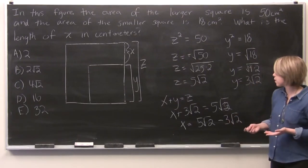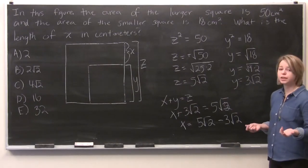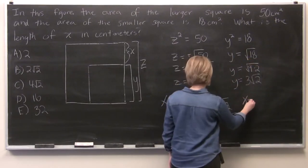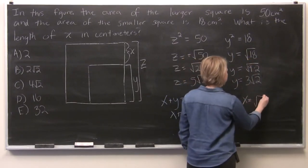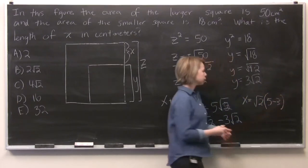...you can factor out the square root of 2 like you would if it was an x or something. And so we've got x equals square root of 2 times 5 minus 3.